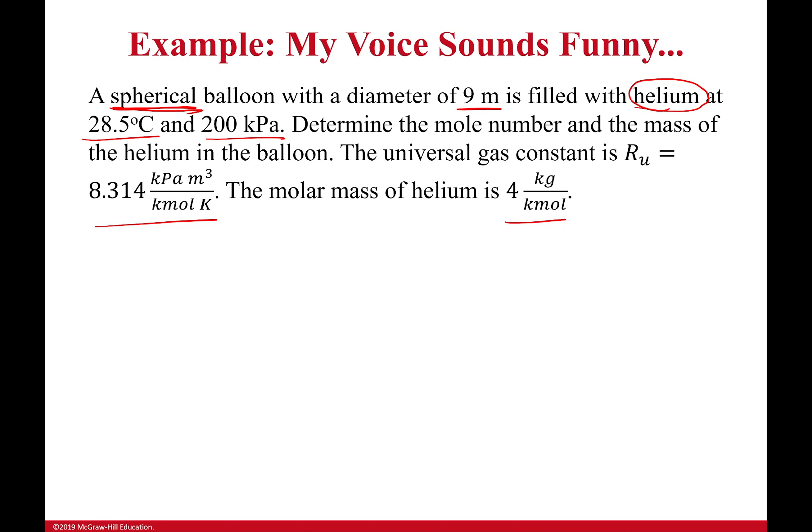We've got a lot of information here. So let's parse through it as much as we can. First off, we have to assume that helium is an ideal gas. Otherwise, we can't really solve this problem. And so if it's an ideal gas, we can use PV equals RT to solve for the mole number and the mass of the helium in the balloon.